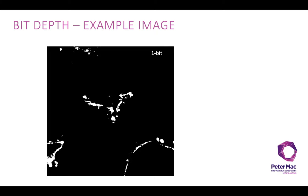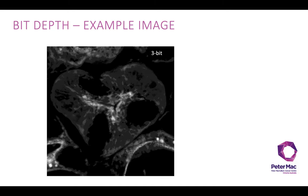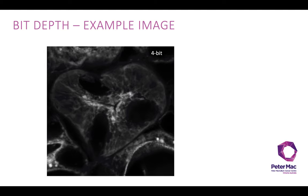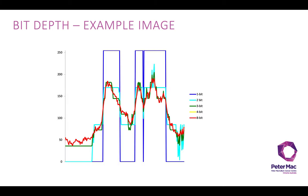Here's a microscope image example. A 1-bit image is either black or white — there's not very much information. But as we go up through the bit depth ranges, there's much more information. If we do some simple quantitative analysis — a line analysis — we can look at the intensity along that line. On the 1-bit scale, we've got either 0 or 255 grayscale values. As we go up in bit depth, we get much more information about the intensities across that line.